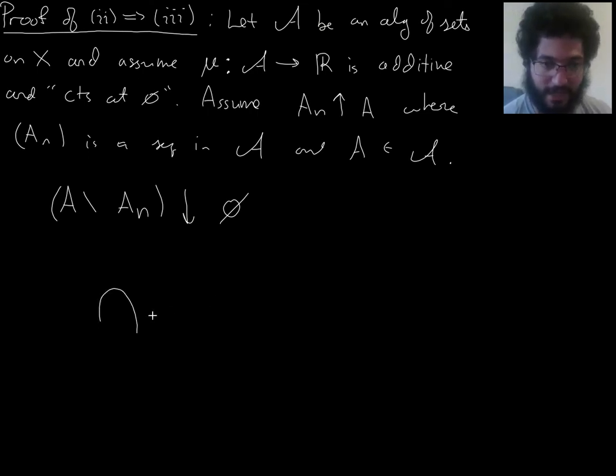If you intersect all of these complements, then that's the same thing as taking the complement of the union. The intersection of all of these is the same as if I took the complement of the union. But the union is A. So, that's the empty set.